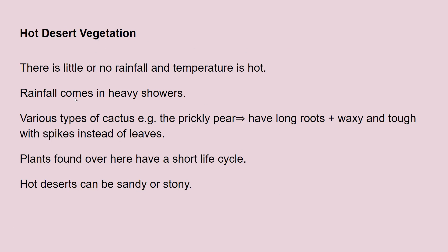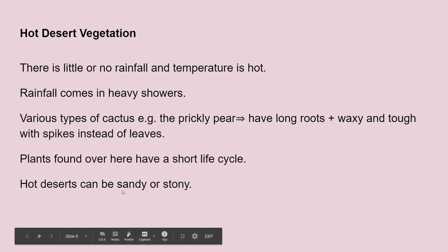For hot desert vegetation, you should know what the rainfall is like. There is very little or no rainfall, but whenever it comes it arrives in heavy showers. Various types of cactus are found there, for example prickly pear. A cactus has long roots, waxy tough spikes, and no leaves. Plants found here have a very short life cycle, and we can have sandy deserts and stony deserts.